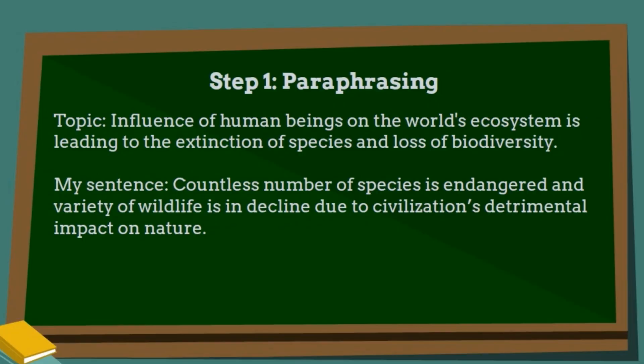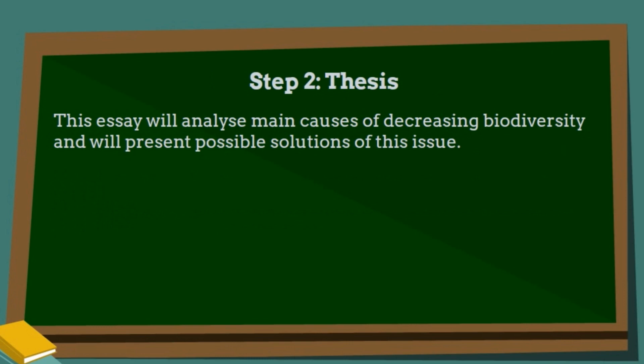Step number one is paraphrasing: Countless number of species is endangered and variety of wildlife is in decline due to civilization's detrimental impact on nature. Step number two, you need to write a thesis statement, and in this type of essay it may look like this: This essay will analyze main causes of decreasing biodiversity and will present possible solutions of this issue.